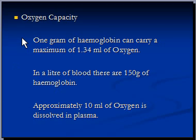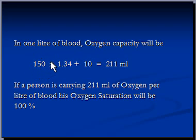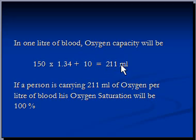If you want to calculate the oxygen capacity: 150 grams — the amount of hemoglobin in 1 liter of blood — times the maximum capacity of each gram of hemoglobin (1.34), plus 10, which is the amount of oxygen that can be dissolved in plasma. So the oxygen capacity is 211 milliliters per liter of blood.